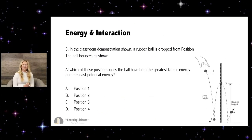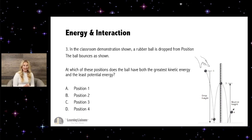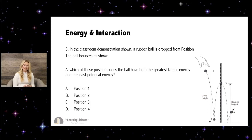Question three. In the classroom demonstration shown, a rubber ball is dropped from position one. The ball bounces as shown. At which of these positions does the ball have both the greatest kinetic energy and the least potential energy? A, position one; B, position two; C, position three; D, position four. I'm going to give you 60 seconds to try this problem and then we'll go over the answer.